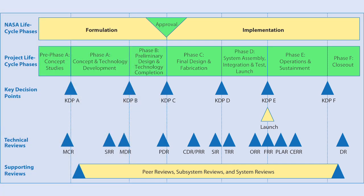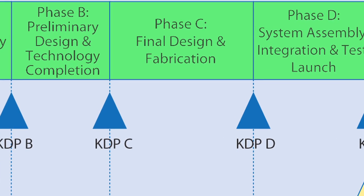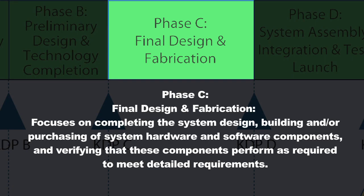As you enter implementation, there are two primary tasks to be performed. One is to complete the system design. One example for additional design considerations for a flight system is the launch vehicle interface. You went through a preliminary design review in Phase B, but now you have to complete your design.